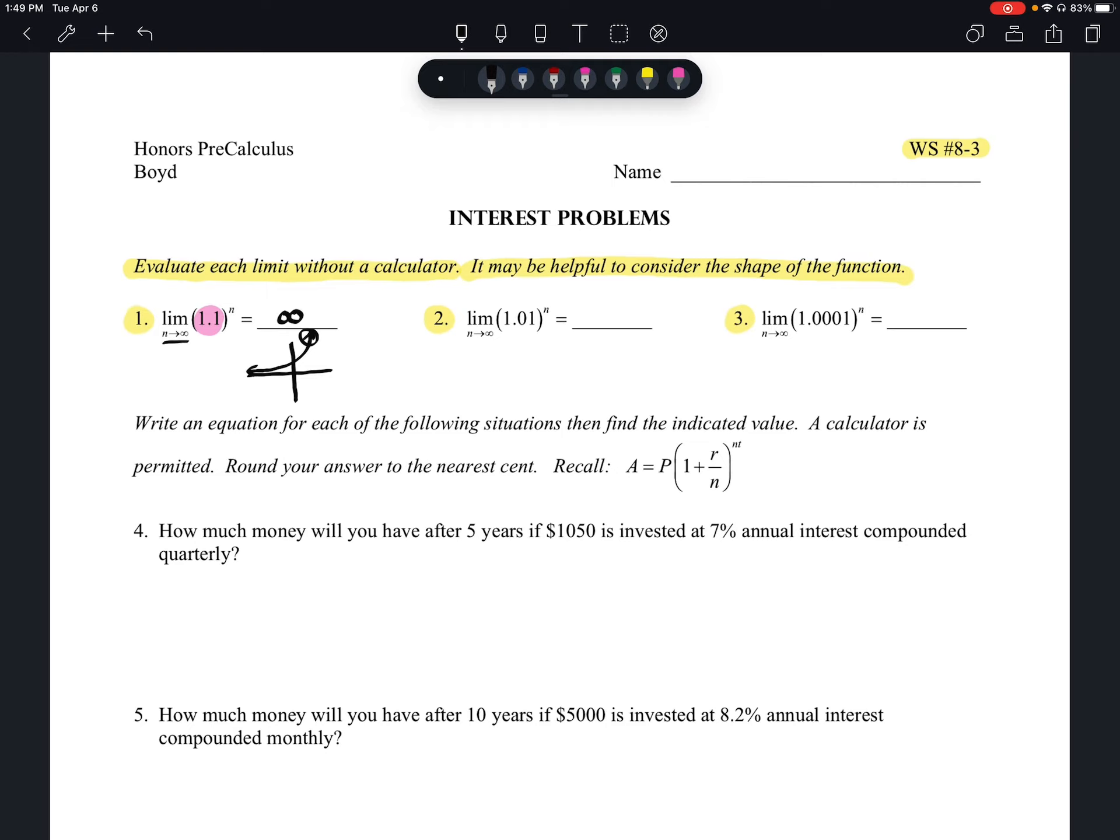In fact, as we look at the next two, you'll see the same properties. Our base 1.01, which is greater than 1. So this next one, we're looking at as n approaches positive infinity as well.